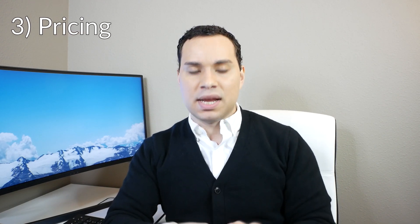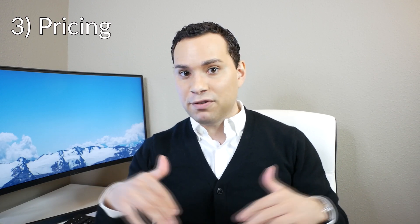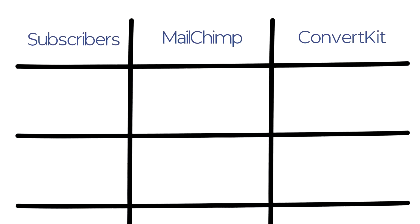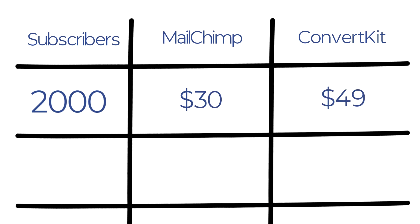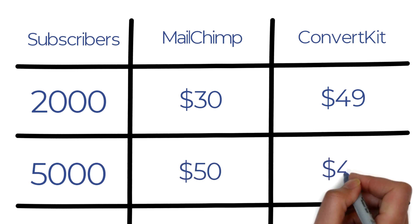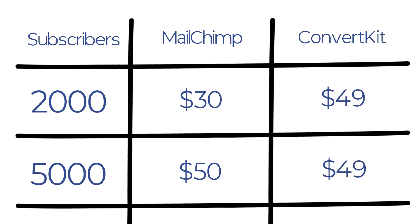Reason number three: ConvertKit comes out on top when it comes to price for advanced automations. MailChimp is free for up to 2,000 subscribers or a certain number of emails per month, which is why a lot of people gravitate towards it in the beginning — which is also something I recommend. However, as soon as you start paying, it's a very different story. Once you hit that 2,000 subscriber mark, you're looking at $30 a month with MailChimp or $49 a month with ConvertKit. When you get up to 5,000 subscribers, you're looking at $50 a month for MailChimp and $49 a month for ConvertKit. So between 2,000 and 5,000 subscribers, ConvertKit is only going to be an extra five to $10 a month.